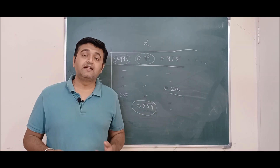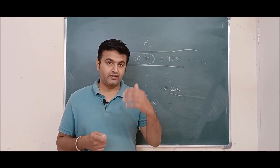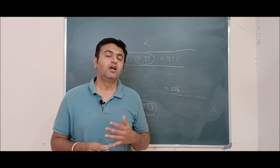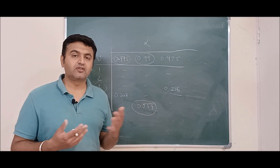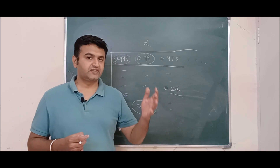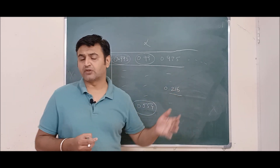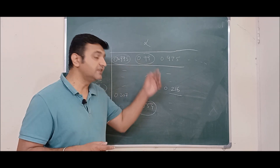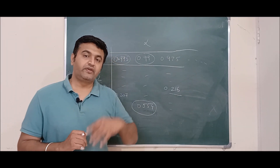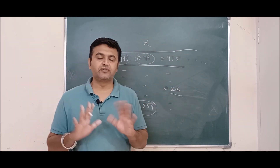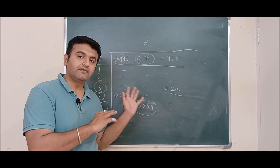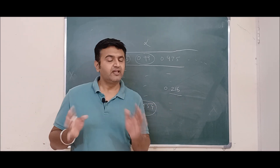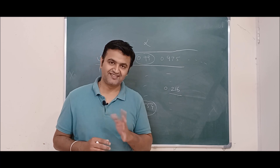Chi-square distribution is used very widely in statistical inference. In the next lectures we will encounter sampling distributions, especially the distribution for sample variance S-squared, as well as estimation theory and hypothesis testing, where chi-square distribution is used a lot. We will take examples at that time and also see how to use the tables. I hope the lecture is conceptually clear — if you have any doubts, you can ask in the comment section. Thank you.